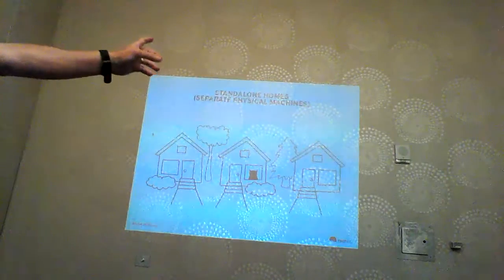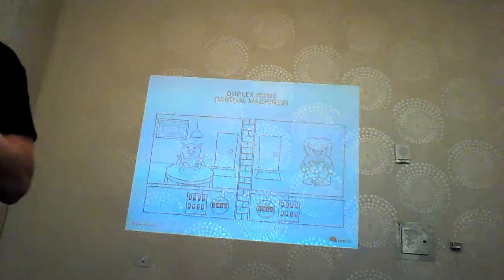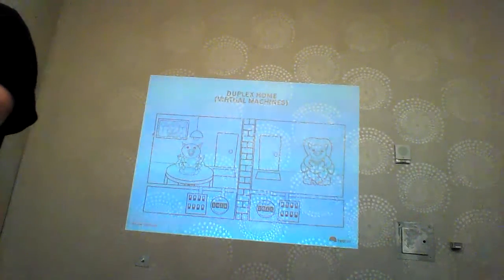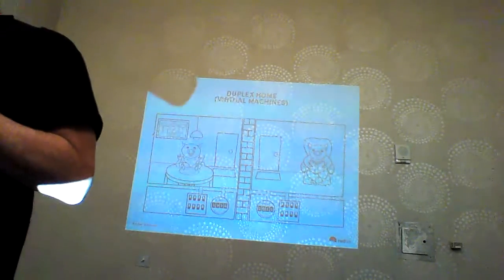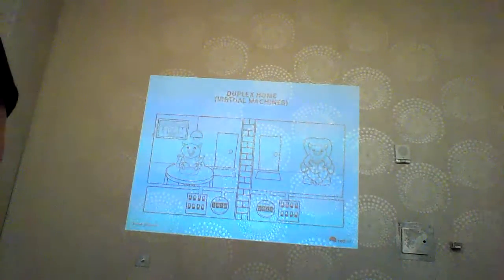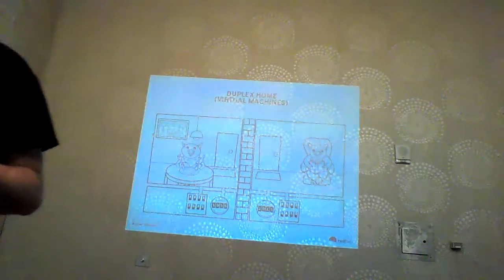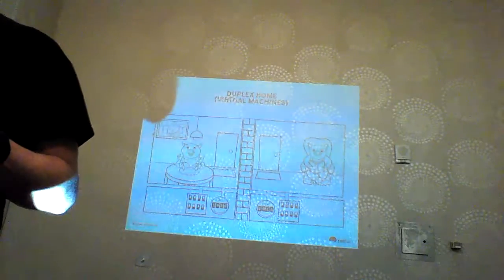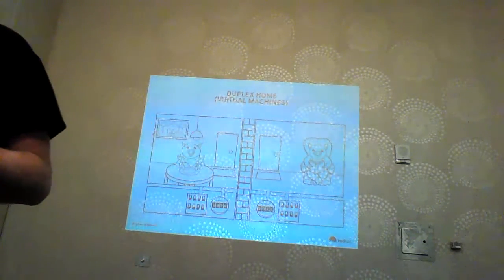Nothing will ever be as secure as running individual physical machines. As soon as you move into virtualization, you're giving up some security — trading usability for security. With virtualization, each application runs in its own VM on the same physical hardware. The way a container breaks through its separation is by attacking the kernel, so a lot of what we'll cover is about shrinking the attack surface on the kernel.